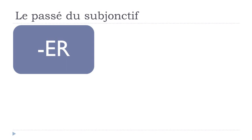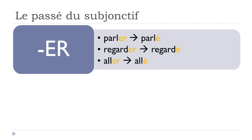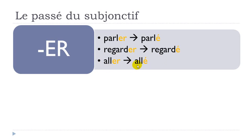For the participe passé: for first group verbs ending in -ER, it's easy. Parler becomes parlé (with accent aigu), regarder becomes regardé. Even aller, the tricky third-group verb, becomes allé. For the second group, choisir becomes choisi, finir becomes fini, unir becomes uni — the -IR ending becomes -I.